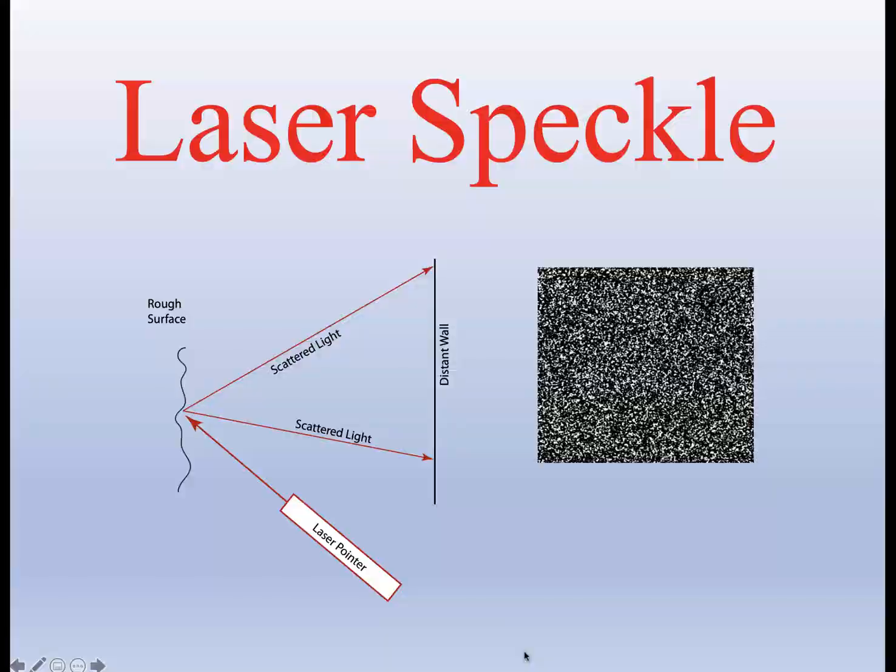If you tuned your television to some channel that wasn't transmitting, you got what essentially looks like random noise. It was called static or snow, but these patterns can also be generated by shining a laser pointer on a rough surface.